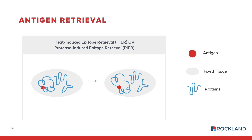You need to break those methylene bridges to retrieve the antigen so the primary antibody can bind to it. As shown in the figure, the blue squiggle lines represent proteins in the fixed tissue sample, and the red circle is the epitope on the antigen of interest. The antigen is buried due to cross-linking, but once the methylene bridges are broken, the primary antibody can easily bind the epitope. The two main methods are protease-induced epitope retrieval (PIER), using enzymes like proteinase K, trypsin, or pepsin, and heat-induced epitope retrieval (HIER), which uses high heat such as hot water baths, microwave, or a pressure cooker to break the crosslinks.